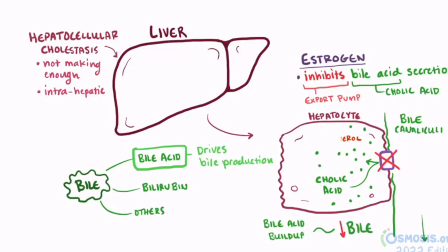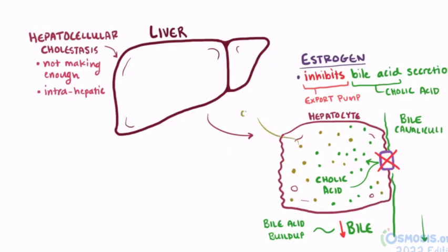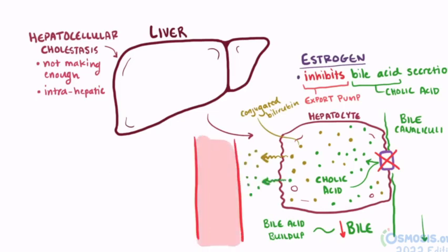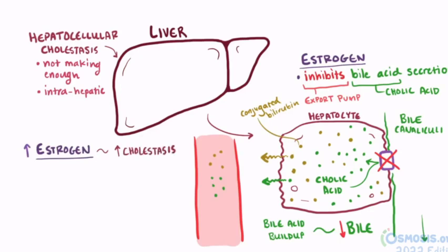When the excretion of bile components like conjugated bilirubin are down, but they're still being conjugated, they also build up along with the bile acids, and eventually it's thought that they diffuse or are exocytosed into the interstitial space, where they can access the blood supply. Since estrogen has been linked as a primary suspect here, it makes sense that we see hepatocellular cholestasis in situations where estrogen levels might be higher.